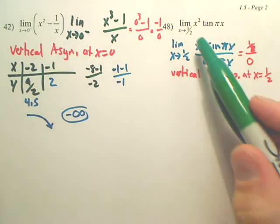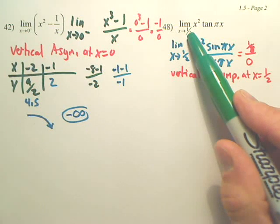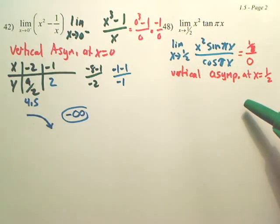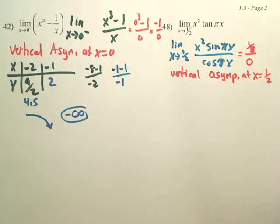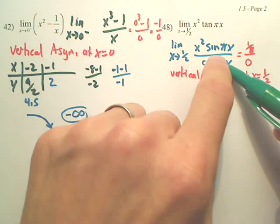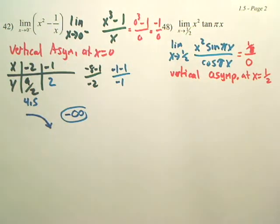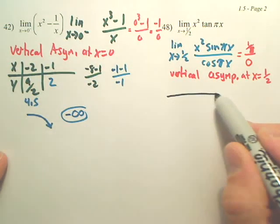So does the limit exist at one half? No. But could it possibly be described as infinity or negative infinity? If they both, for instance, if this graph has an asymptote, if they both go up, can we call it infinity? If they both go down, can we call it negative infinity? So basically you just got to do a little table to see which direction they're going. But you have to do both sides. Got it?